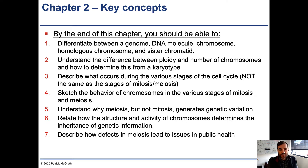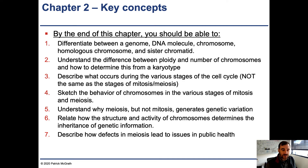You'll need to understand the difference between ploidy, haploid, diploid, tetraploid, and number of chromosomes, and how to determine this information from a karyotype. You need to describe what occurs during the various stages of the cell cycle — this is not the same as the stages of mitosis and meiosis. You should be able to sketch the behavior of chromosomes in the various stages of mitosis and meiosis, understand why meiosis but not mitosis generates genetic variation, relate chromosome structure and activity to the inheritance of genetic information, and describe how defects in meiosis lead to issues in public health.